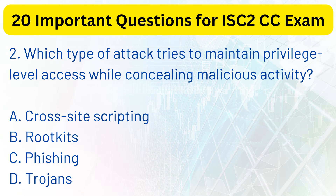Question 2. Which type of attack tries to maintain privileged-level access while concealing malicious activity? a. Cross-site scripting. b. Rootkits. c. Phishing. d. Trojans. The correct answer is b. Rootkits.